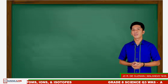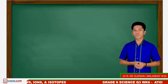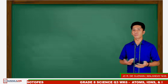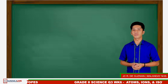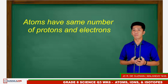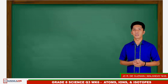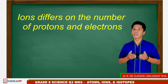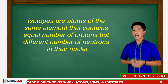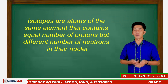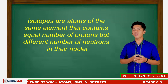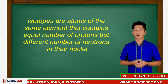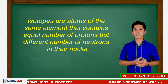To sum it up, atoms, ions, and isotopes differ with the number of their subatomic particles. Atoms have the same number of protons and electrons. Ions differ on the number of protons and electrons. While isotopes are atoms of the same element that contain an equal number of protons but a different number of neutrons in their nuclei.